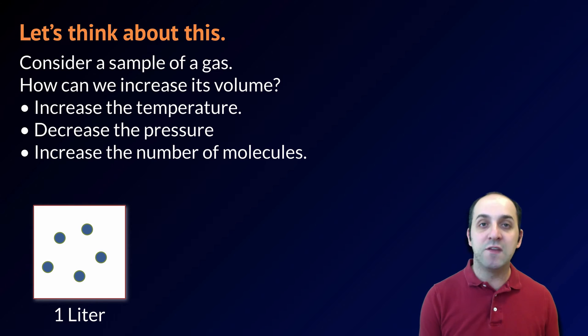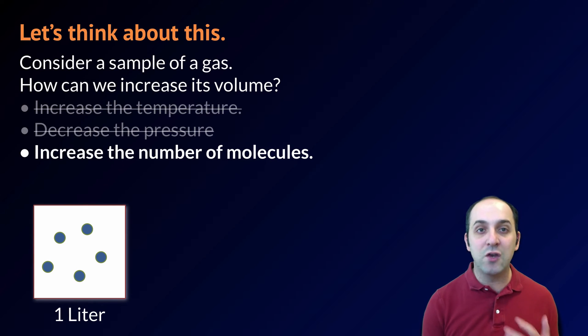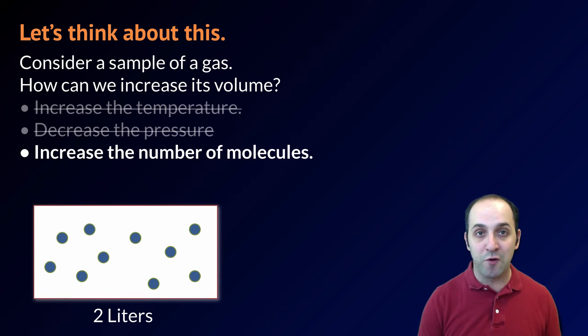But what happens if we want to keep the temperature and the pressure the same? If so, the only thing that we can do in order to increase the volume of our gas is to increase the number of molecules. If we were to double the number of molecules, we would double the volume of our gas. If we were to halve it, we would cut our volume in half.